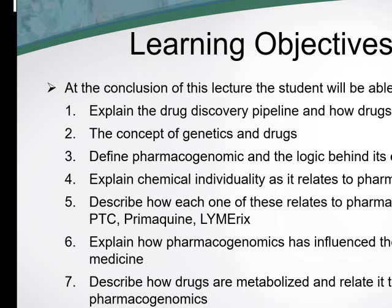We're going to describe how each one of these phenomena or chemicals relates to pharmacogenomics: PTC, primaquine, and limericks. Students should be able to explain pharmacogenomics and the influence that it has had — and is going to have — on the practice of medicine. Then we'll look at pharmacogenomics in light of how drugs are metabolized and relate that back to DNA and DNA repair.